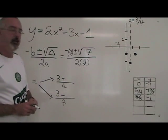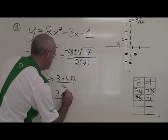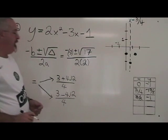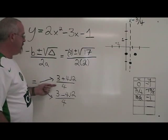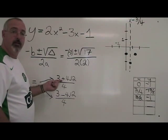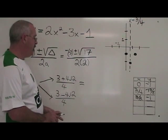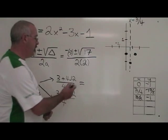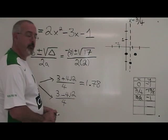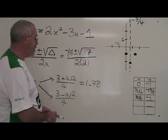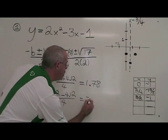And the square root of 17 is 4.12. At this point, we have split our formula in two. The plus or minus makes us solve it if we have a plus, and solve it if we have a minus. With the plus, 3 plus 4.12 divided by 4 is 1.78. With the minus, 3 minus 4.12 divided by 4 is negative 0.28.